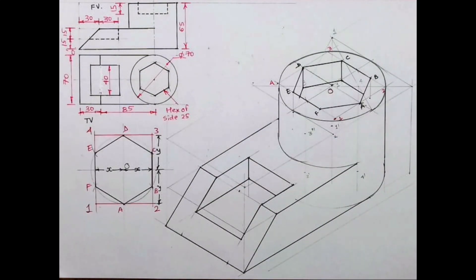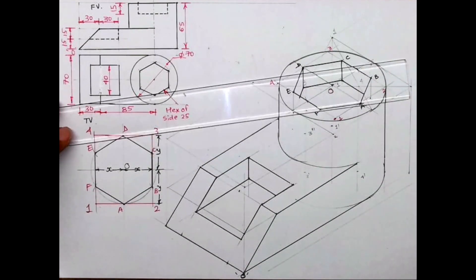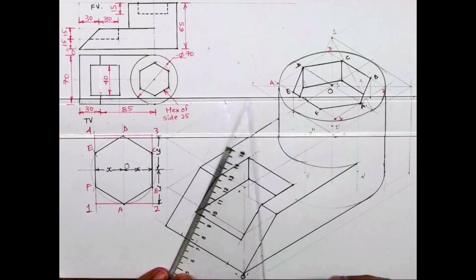I hope you people have understood this sum. Thank you. We can write O and 30, 30 degree as well as length, width and height.